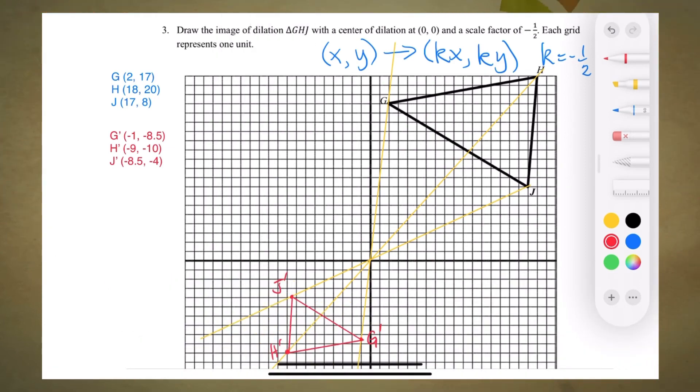So what happens when the scale factor K is a negative value? From this example, we see that if the value of scale factor K is negative, the dilation takes place in the opposite direction from the center of dilation.